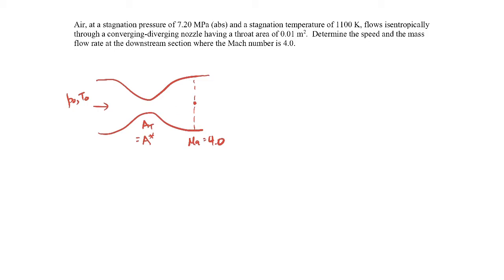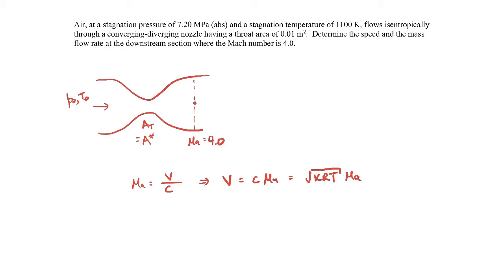We want to determine the speed and mass flow rate at the downstream section where the Mach number is 4. To get the speed, since I'm given the Mach number, I know that the Mach number is related to the flow speed and the speed of sound. The flow velocity equals the speed of sound times the Mach number. The speed of sound is the square root of kRT, where k is the specific heat ratio, R is the gas constant for air, and T is the absolute temperature. So to find the velocity, I need to find the temperature.